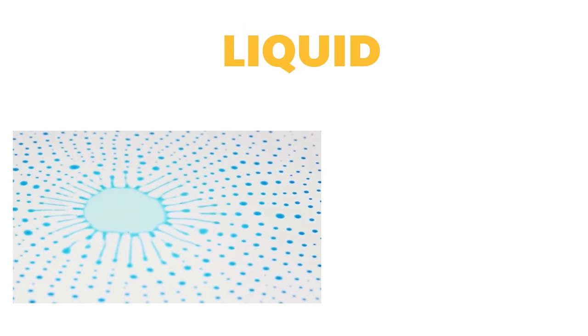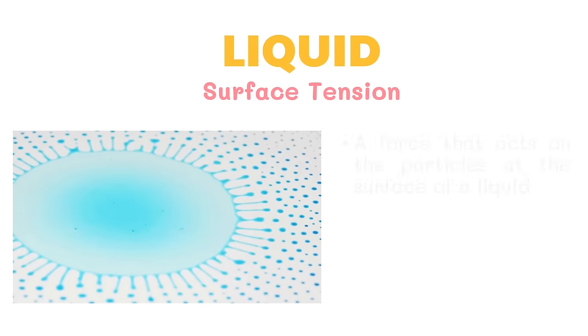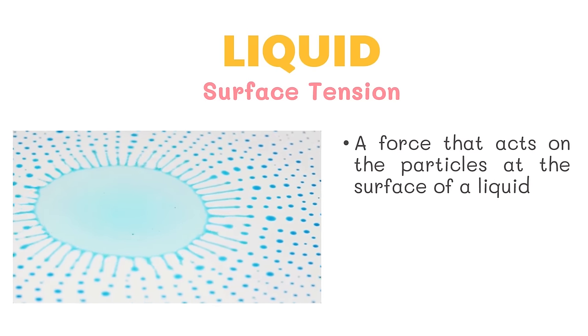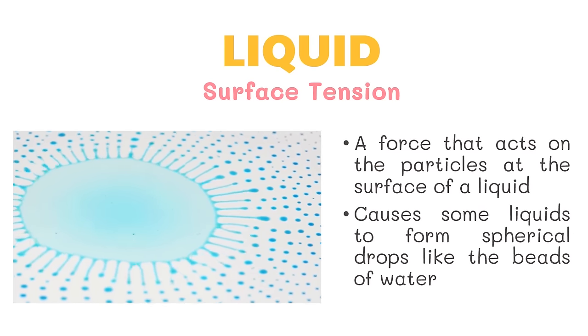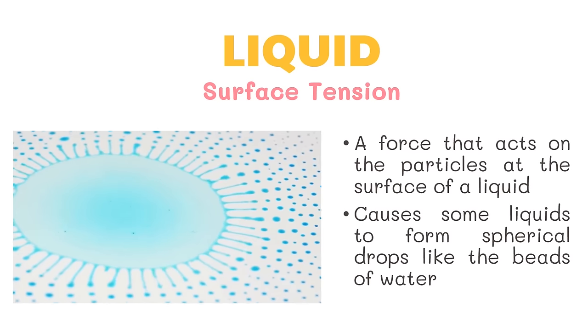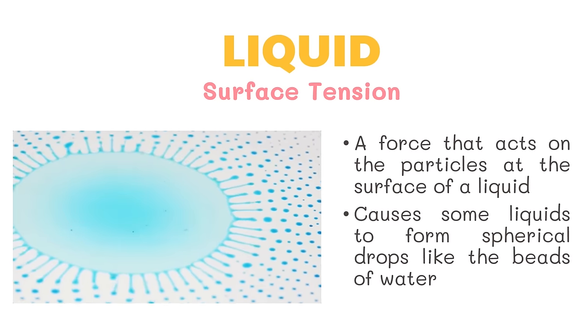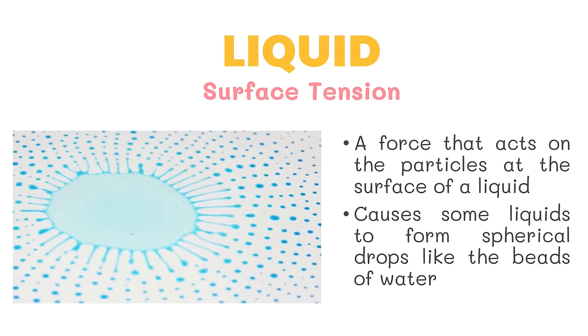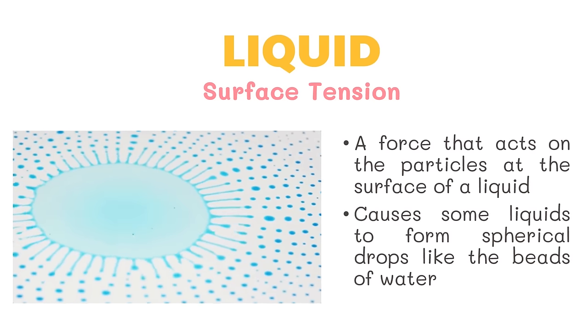Liquids have unique characteristics. A special property of liquids is surface tension. Surface tension is a force that acts on the particles at the surface of a liquid. Surface tension causes some liquids to form spherical drops, like the beads of water. Different liquids have different surface tensions. For example, cooking oil has a very low surface tension and forms flat drops.